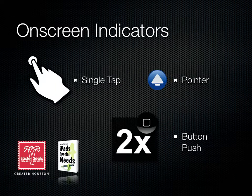We're going to use three different types of visual indicators. We'll use a hand every time I tap. Every time I hit a button on the outside of the device, we'll give you an icon. And we're going to use arrows to help point out key information on screen.